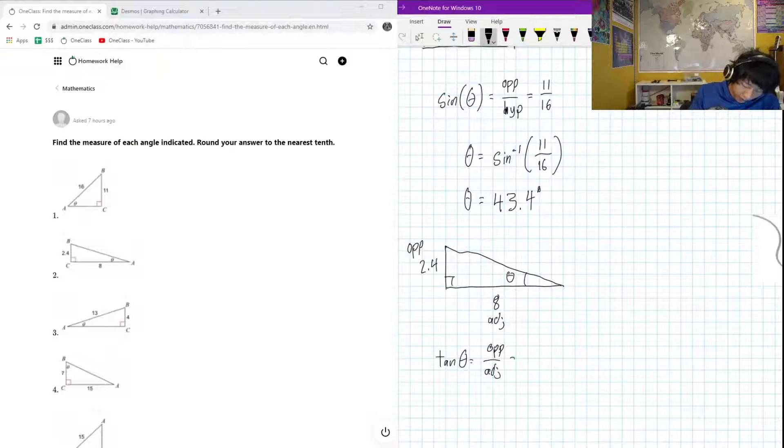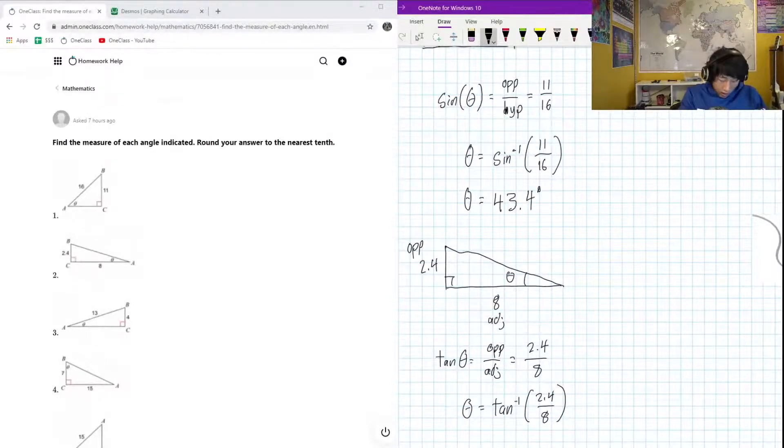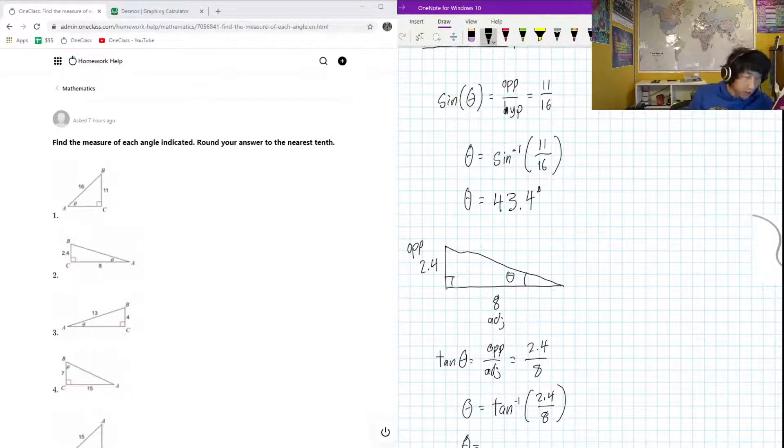Our opposite in this case is 2.4 divided by 8 for adjacent. So if we want to get the angle, we take the inverse tan of 2.4 over 8. Let's ask our calculator that: 2.4 divided by 8, and my calculation for this is 16.7 degrees if we round it to the nearest tenth.